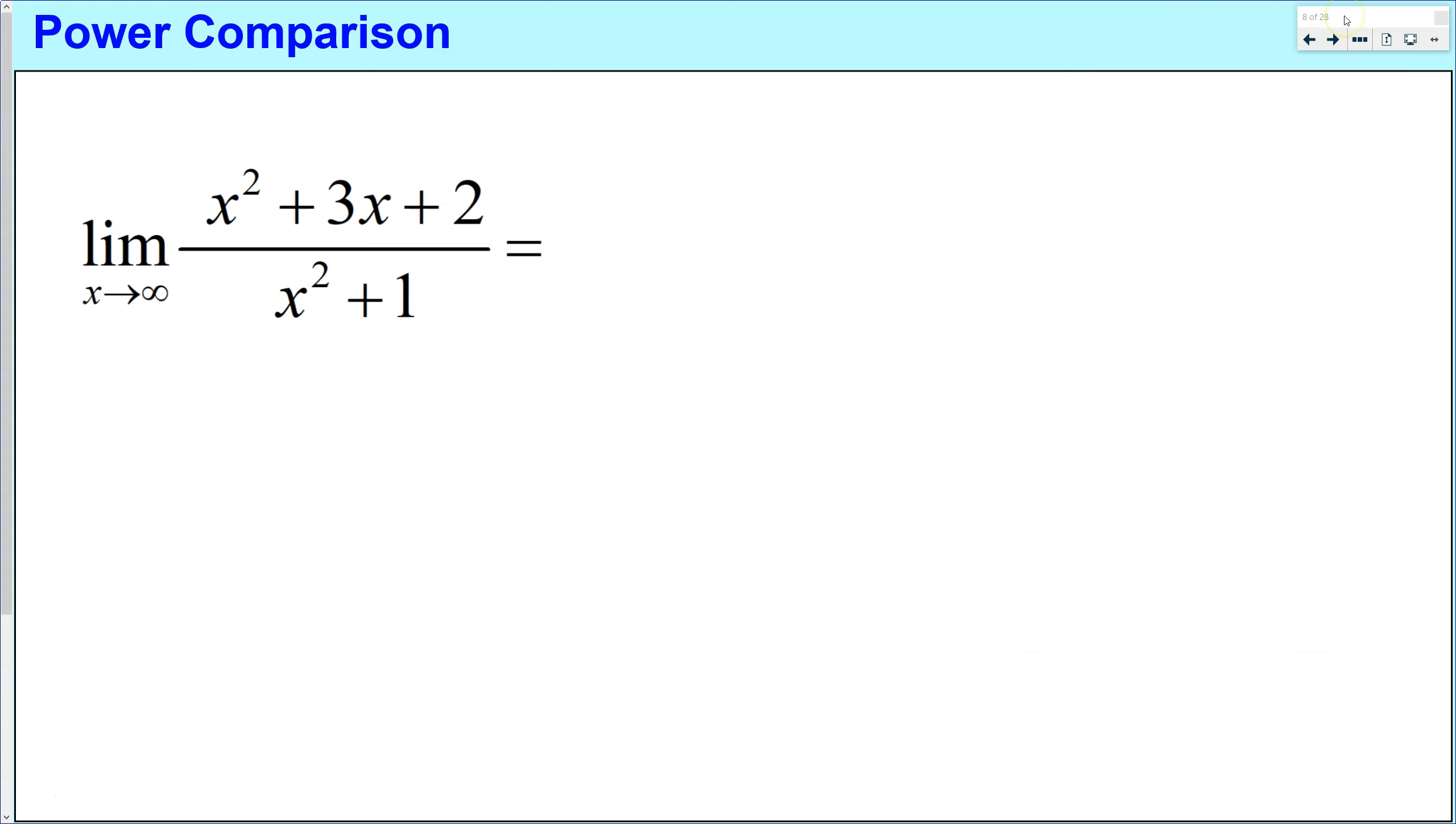It's very similar to the last, except the powers have changed. So again, we want to ask the same question, which dominates? The numerator or the denominator, and specifically, which terms within each? So if we look at this, we've got an x squared, an x, and a constant. So this one's going to win, and here we have an x squared versus a constant. So this one's going to win. So the two terms that we want to look at are those x squared terms.